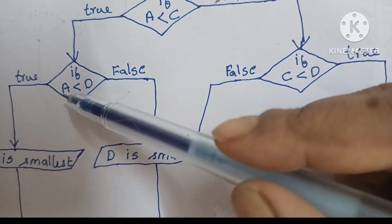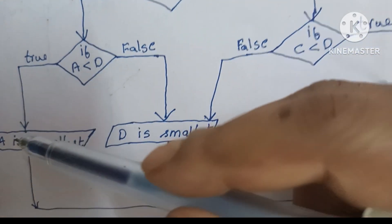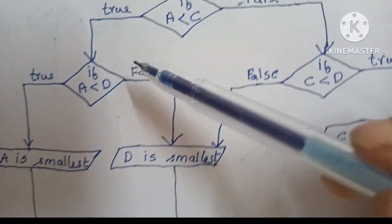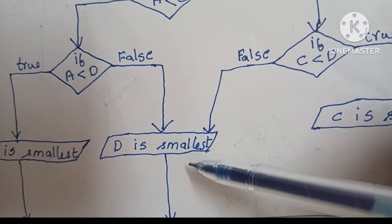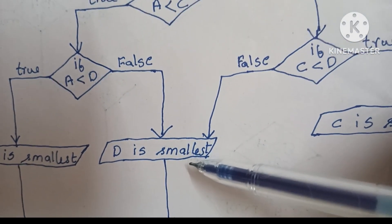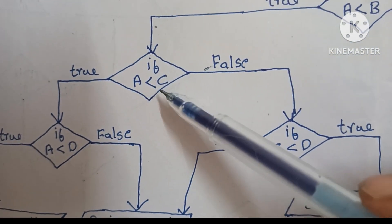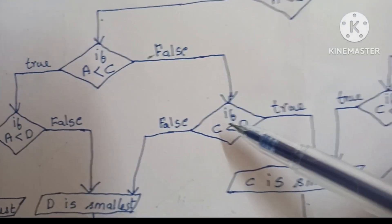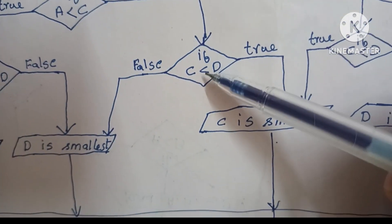If A less than D and this condition is true, we print A is smallest. If this condition is false, we print D is smallest. If A less than C is false, we compare C with D.